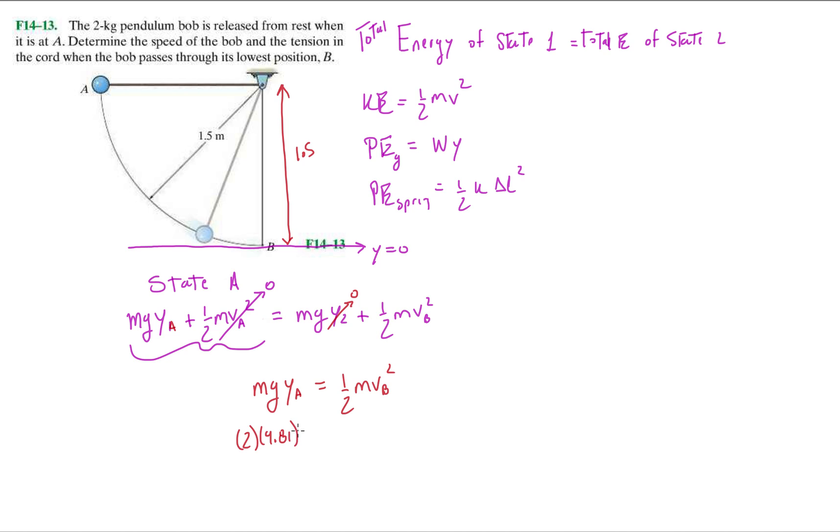Well it's just going to be this, the radius of this pendulum, one point five. Equals one half times two vB squared and we're looking for this guy over here. So let's say that goes away and we're left with vB is, doing it out we get five point four two meters per second.